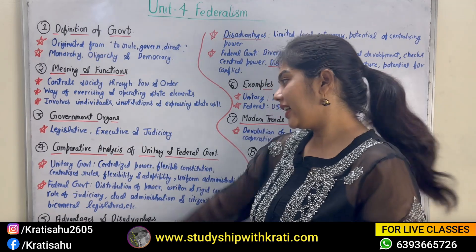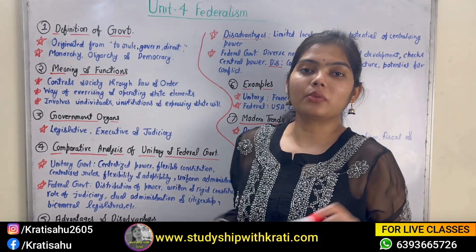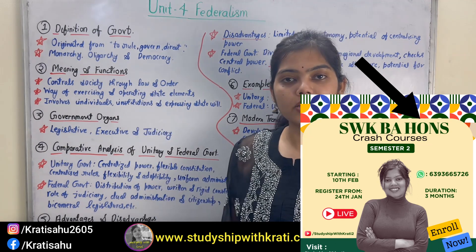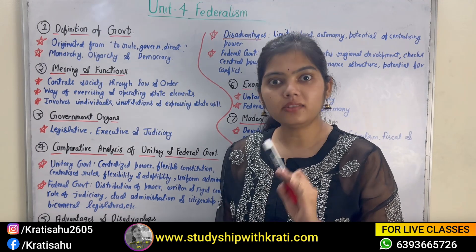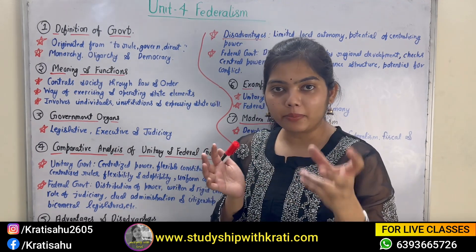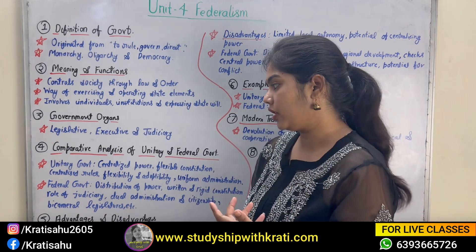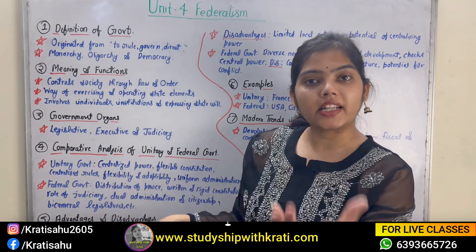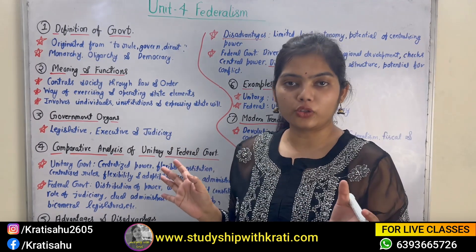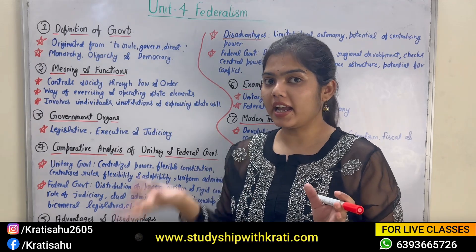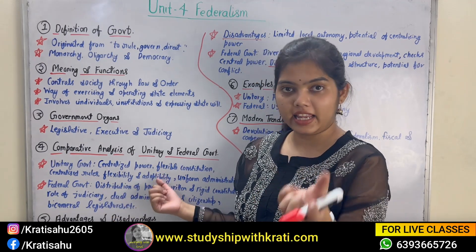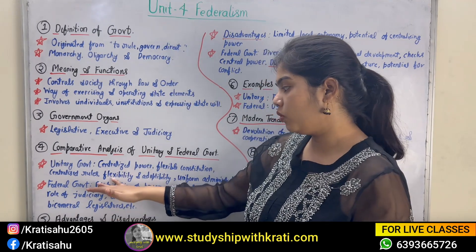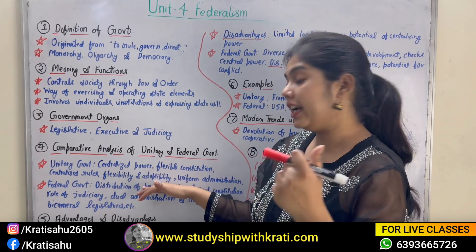Now let's do a comparative analysis of unitary and federal government. Students, according to your chapter, this won't take much time — it's very easy. You can read through my notes once and it will be more than enough. If you need to do elaboration in your exam, you can explain a little more. Unitary government means that across the entire country, there is a central government — they have more centralized power, as the word itself suggests.